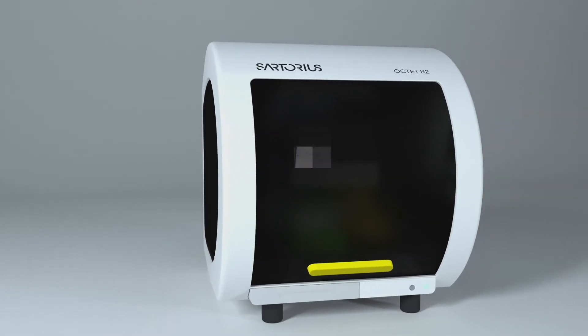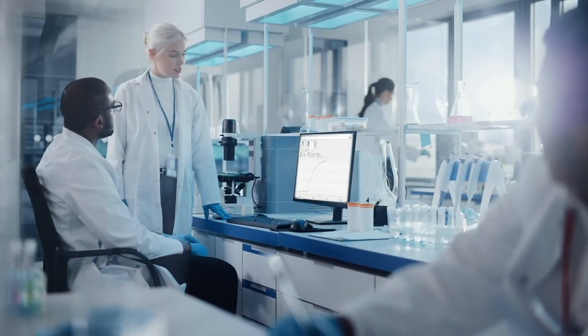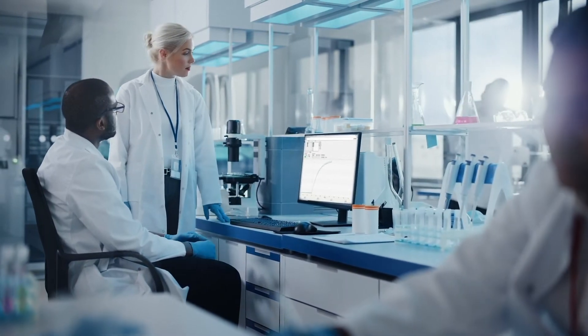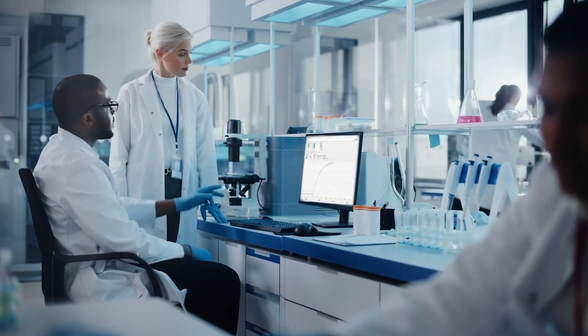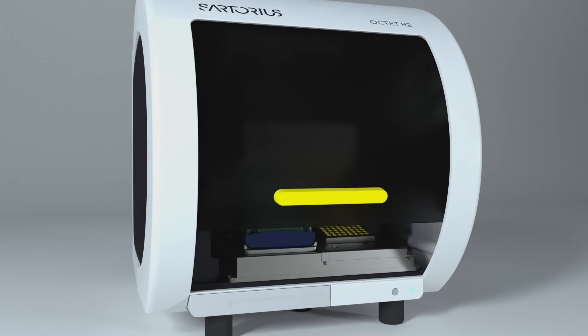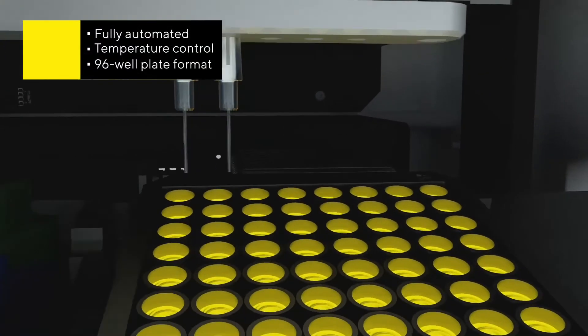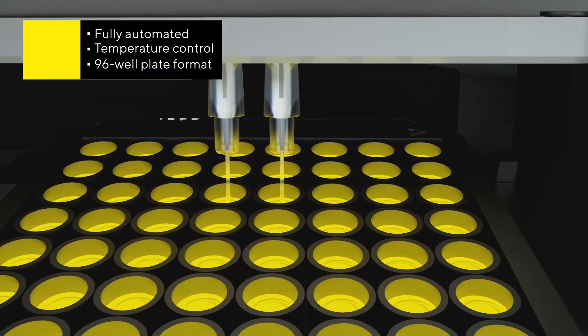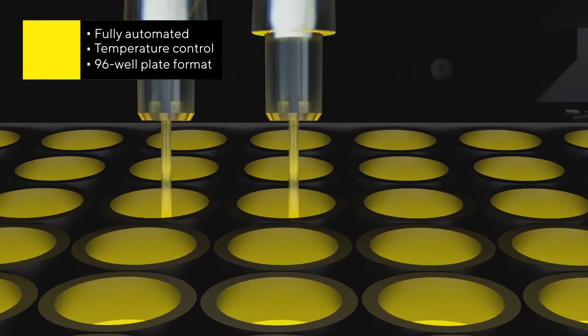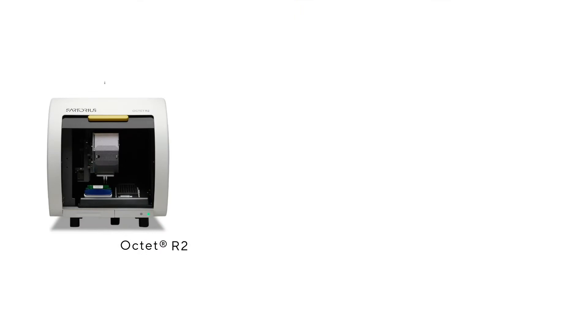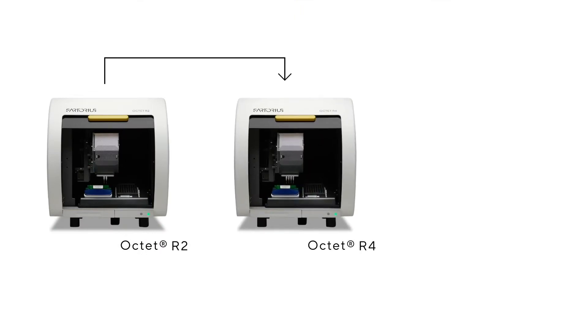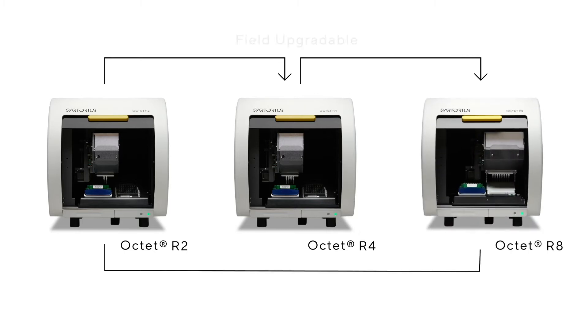The entry-level Octet-R2 is intended for labs with low throughput requirements or a limited budget. It brings the benefits of BioLayer Interferometry to a wider audience, including features such as robust temperature control and microplate cooling that were previously only available on larger, high-end systems. The modular design of the R series makes it possible to upgrade your instrument as your throughput requirements change.